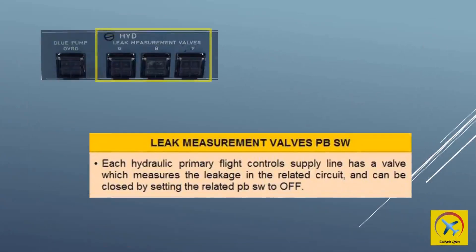Leak measurement valves push button switch on the overhead panel: each hydraulic primary flight control supply line has a valve which measures the leakage in the related circuit, and can be closed by setting the related push button switch to off.